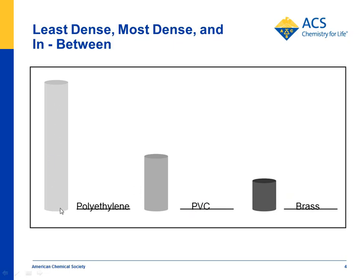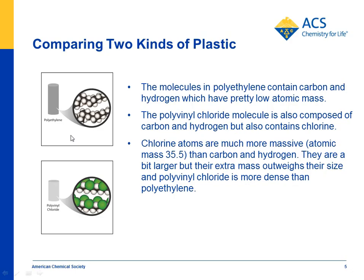What makes polyethylene have a smaller density than PVC? Polyethylene is made of carbon and hydrogen, which have pretty low atomic mass. Polyvinyl chloride is also made of carbon and hydrogen, but it has another atom — chlorine — which has a pretty high atomic mass of 35.5. So you could make the argument that chlorine is large enough in mass that the overall density of PVC goes up.